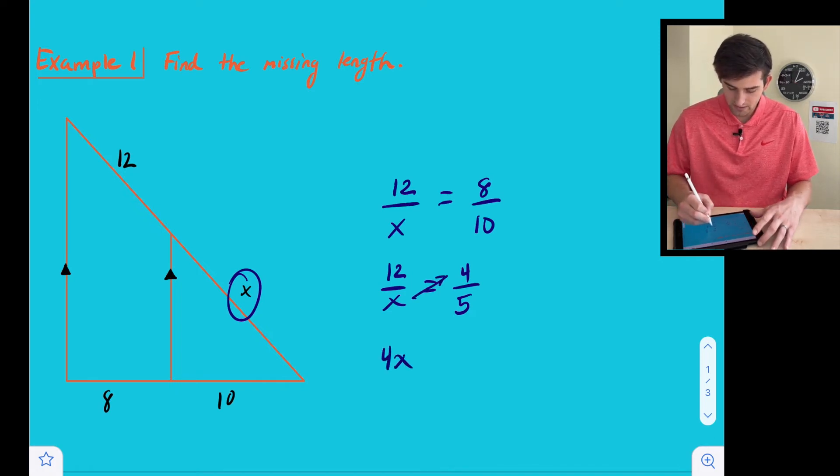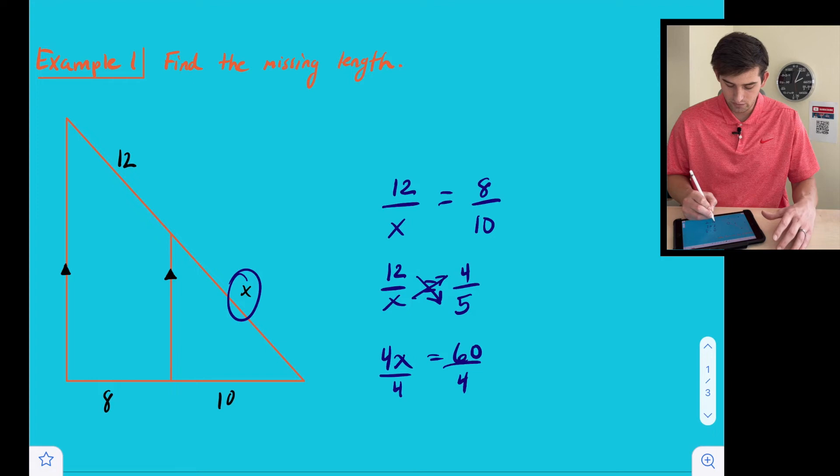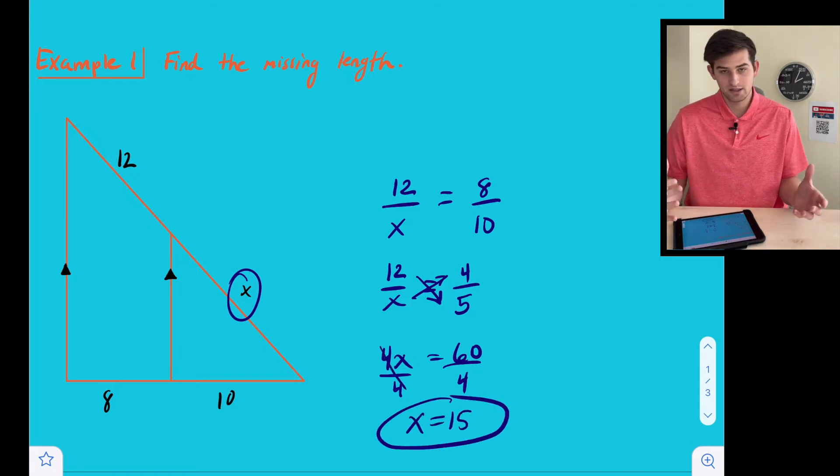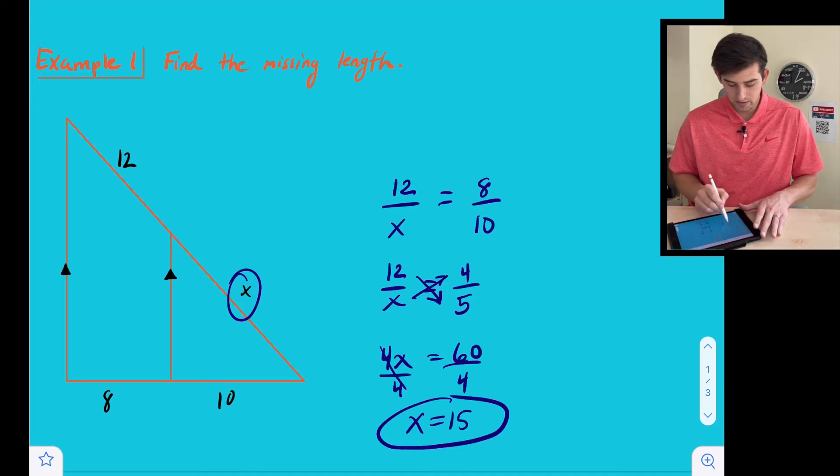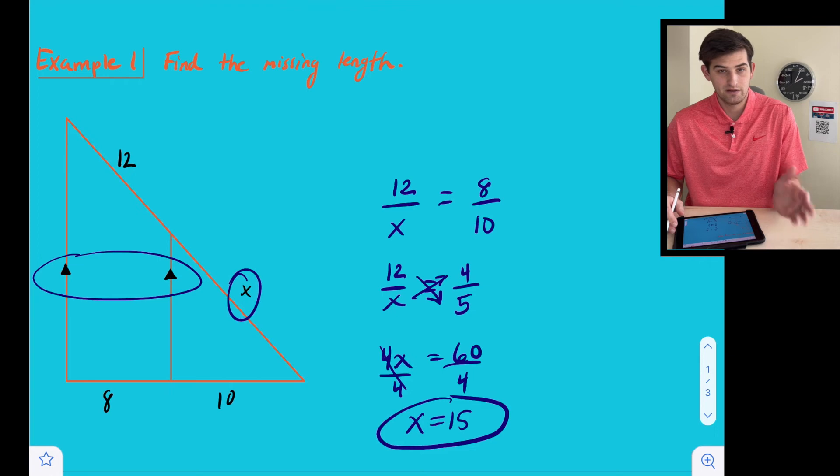So X times 4 would be 4X, 12 times 5 would be 60, and 4X equals 60, so we can divide both sides by 4 and we get X is equal to 15. So our missing side would be 15. We could go ahead and do that because we knew that those sides were parallel, so we could use our proportionality theorem.